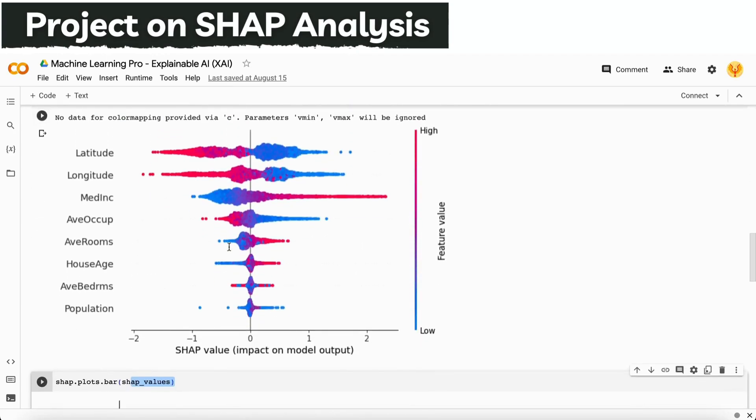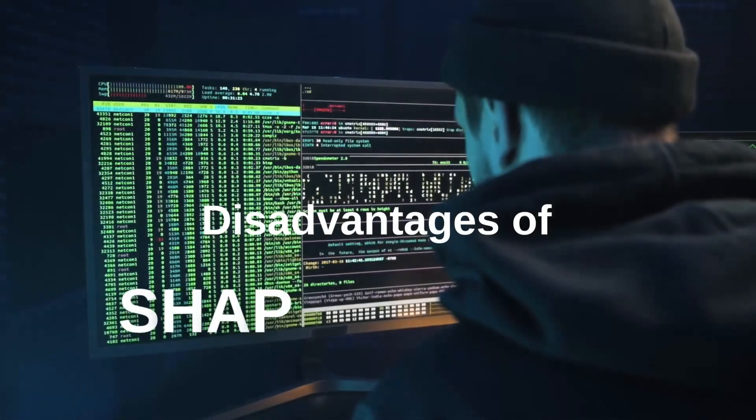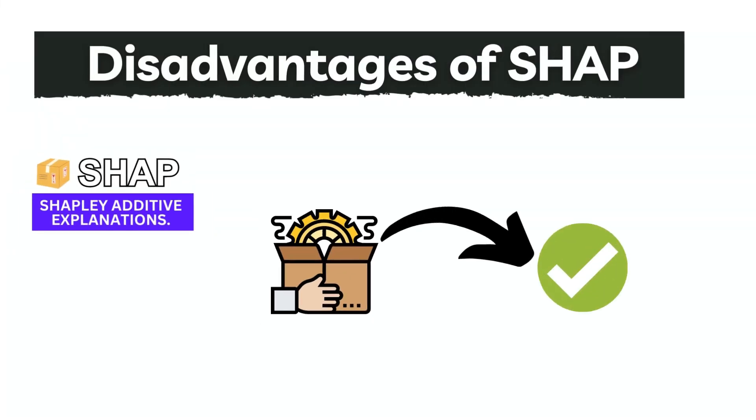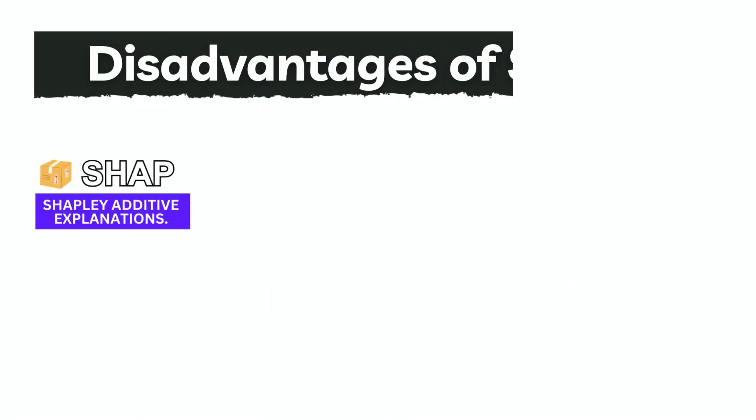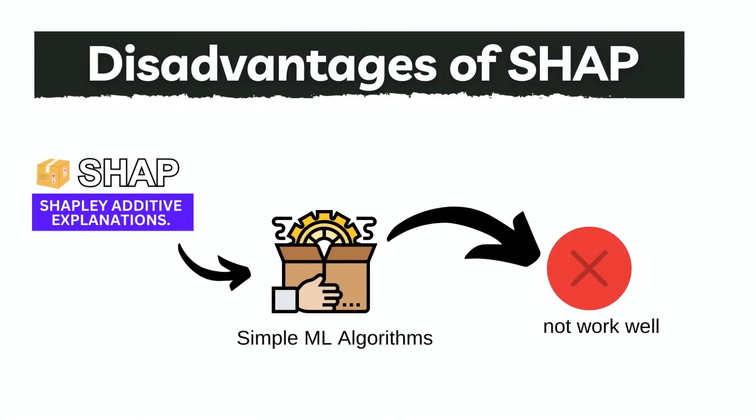In the next phase we will see that SHAP isn't always the answer. It shines with complex models, but for simpler ones it will be overkill. For simpler models we need to use the stats model or the GLM models only.